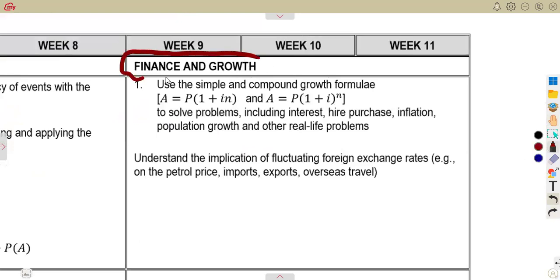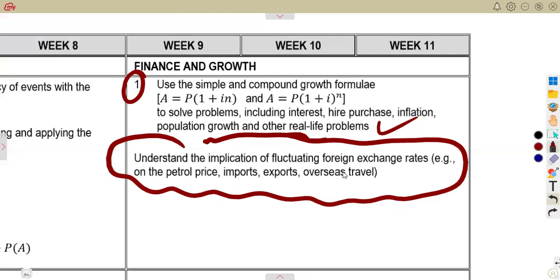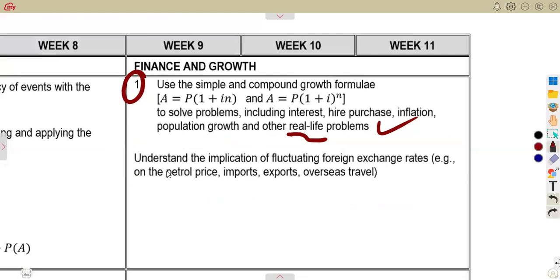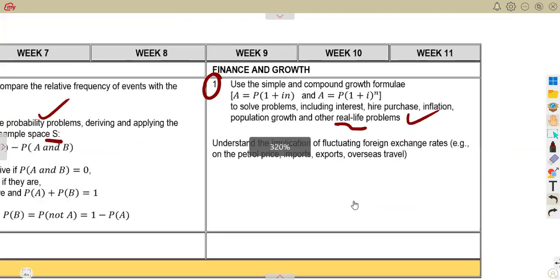Then the last part is on the finance and growth. That is the last part that you must consider, the use of the simple and compound growth formulas. You must use that to solve problems, including interest, higher purchases, inflation, population growth, and other real-life problems. Understand the implication of fluctuating foreign exchange rates, e.g. on the petrol prices, imports, exports, overseas travels. So that is the major part that you are going to have as the last topic, which is finance and growth.